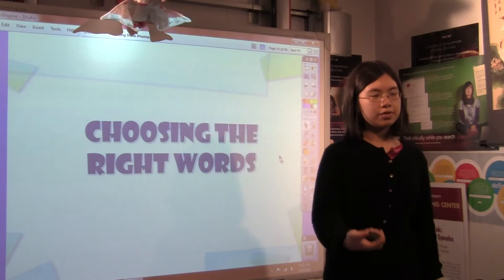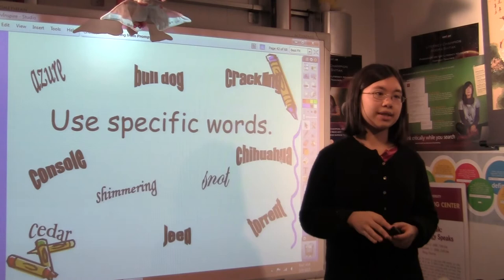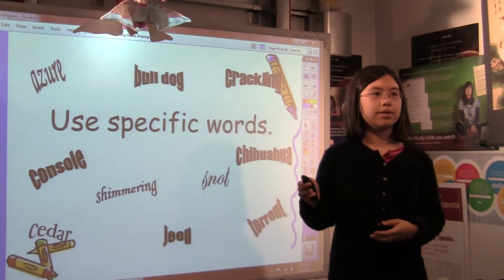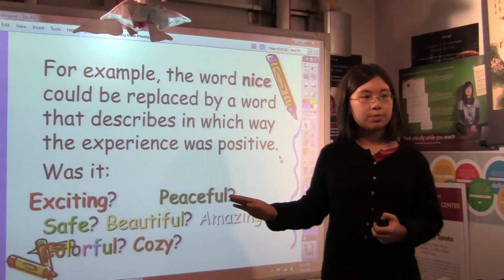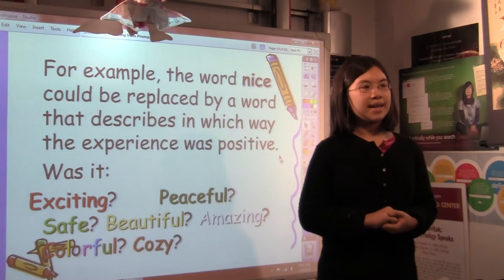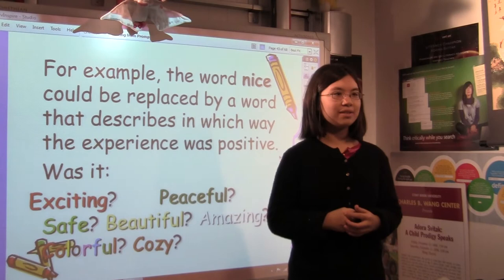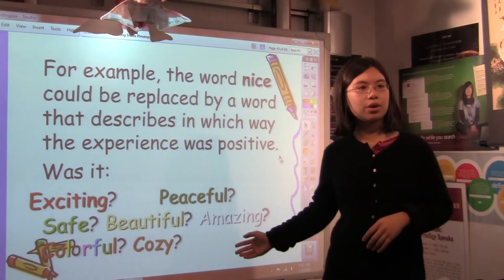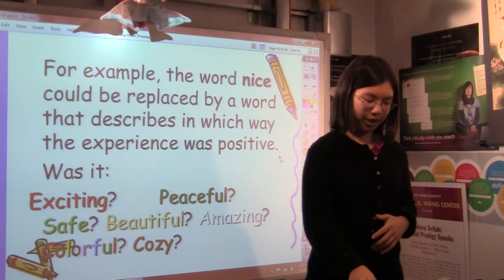Word choice is pretty obviously the choice that you make in the words that you use. So when you write a response to a prompt, you don't want it to be Dick and Jane style. You want it to be interesting, and you want it to be specific. So for instance, you would want to use a more specific word than nice, or even dog. You might specify what kind of dog it is, just to be more detailed. For example, the word nice could be replaced by a word that describes in which way the experience was positive. So let's say you started to write about a really great time you had at an amusement park. You say, I took the biggest, scariest roller coaster. It was nice. Who uses nice to describe their experience on a roller coaster? It leaves people hanging there wondering, well, what do you mean by nice? Do you mean it was like a really calm roller coaster, or do you mean it was exciting? Peaceful, safe, beautiful, amazing, colorful, cozy. So in this case, it would make more sense to say it was really exciting, because that's probably what your ride on the roller coaster was.